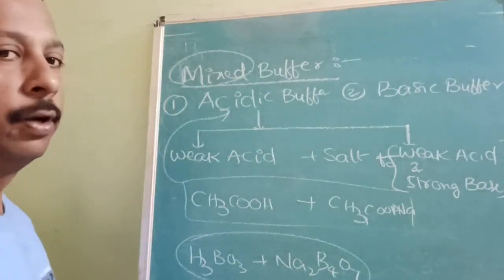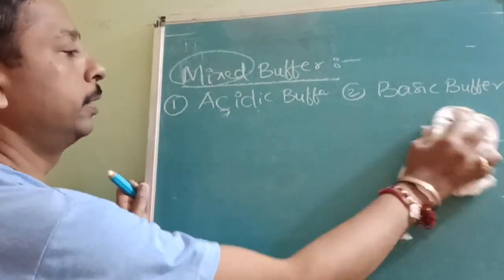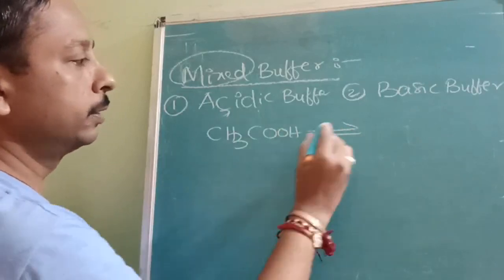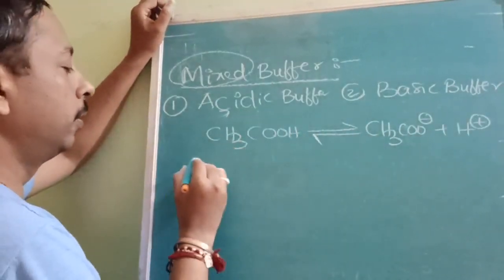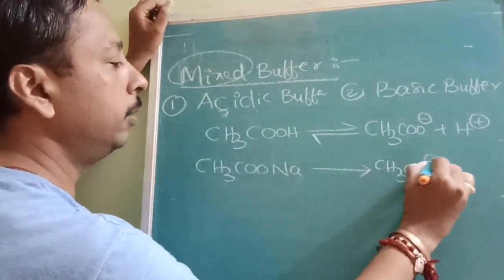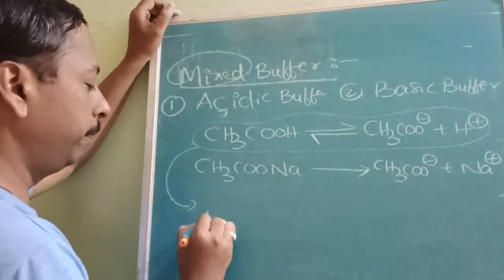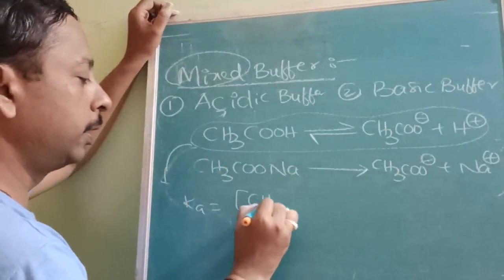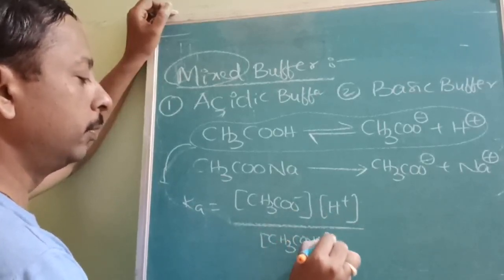Now we will derive the formula and understand what is buffer action. Weak acid CH₃COOH is in equilibrium: CH₃COO⁻ + H⁺. The salt is mostly completely ionized: CH₃COONa → CH₃COO⁻ + Na⁺. For this acid, KA = [CH₃COO⁻][H⁺] / [CH₃COOH]. So concentration of H⁺ = KA × [CH₃COOH] / [CH₃COO⁻].